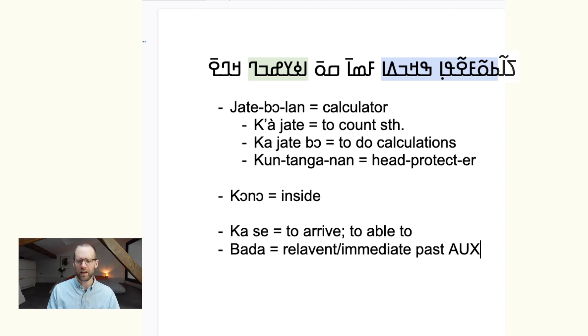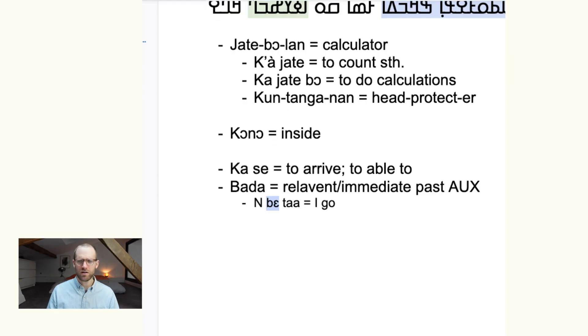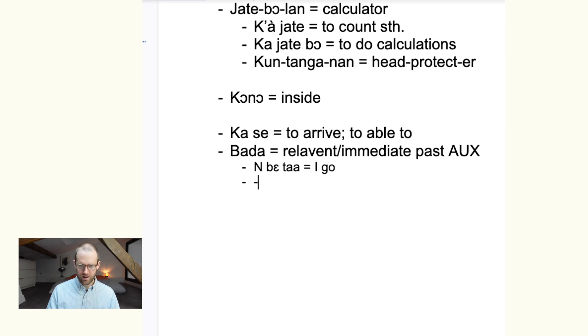So that's just like the other ones we know. Like, for instance, we could say something like, and I'll make this a little bit smaller, mbe ta, right, I go, and this is, be is our auxiliary marker.